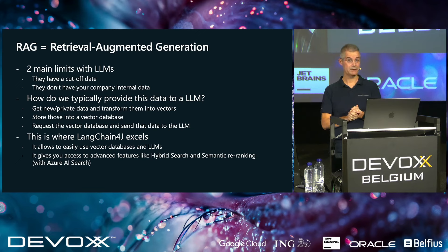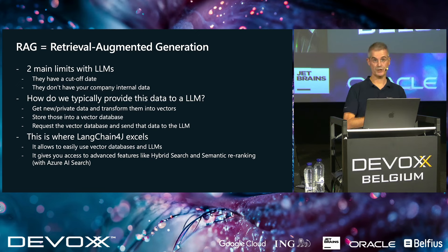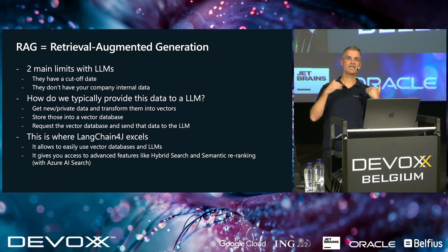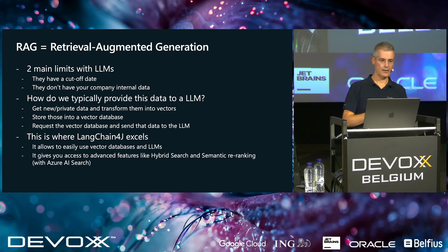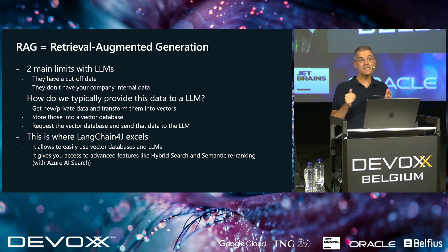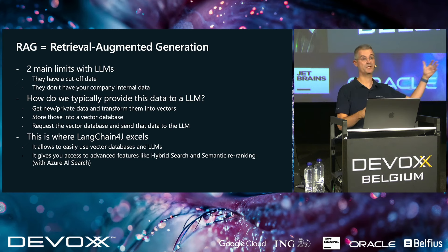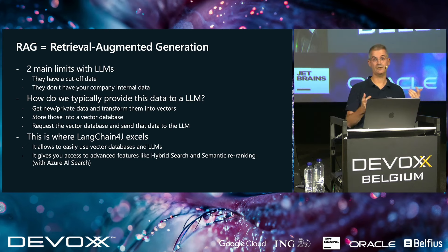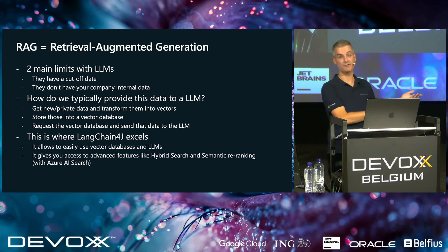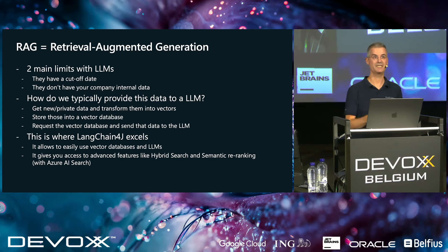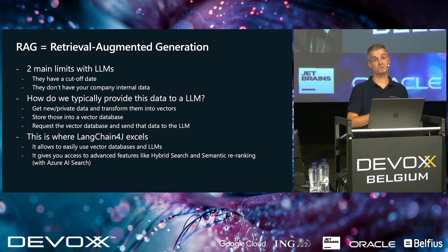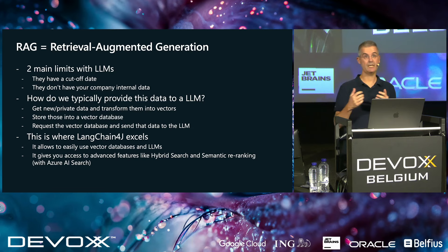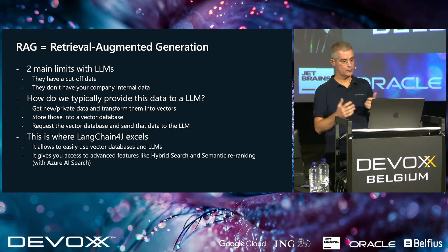RAG stands for Retrieval Augmented Generation. The goal of RAG is to fix two of the main issues with LLMs: first, they have a cut-off date — they were trained a few years ago so they don't know what happened last week. And second, they don't know private or internal company data. So if you ask, 'What's my company policy when I travel to DevOps?' it doesn't know because that's not public data. Those two issues are pretty important, and that's why there are different ways to fix them.